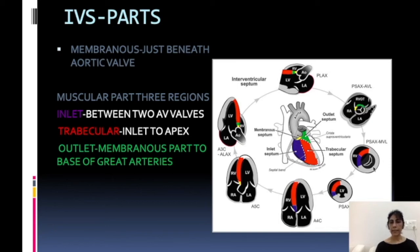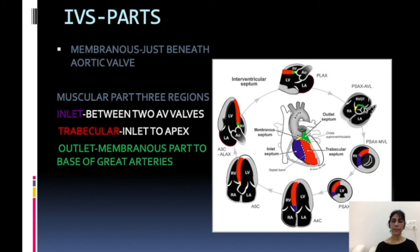This is the parasternal short axis view at the level of the mitral valve. Here we are able to see the trabecular septum and then the inlet septum. Because we are now at the level of the chamber, we are closer to the atrioventricular valves. At the higher level we were closer to the semilunar valves, which is why we had the outlet part there, and here we have the inlet part.